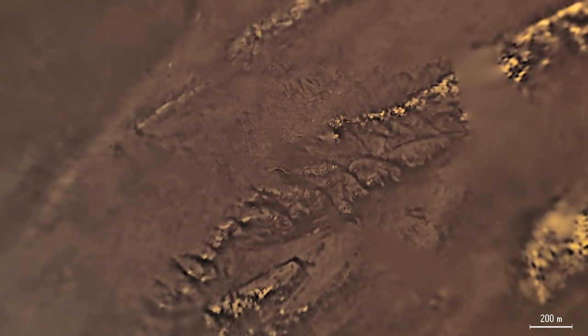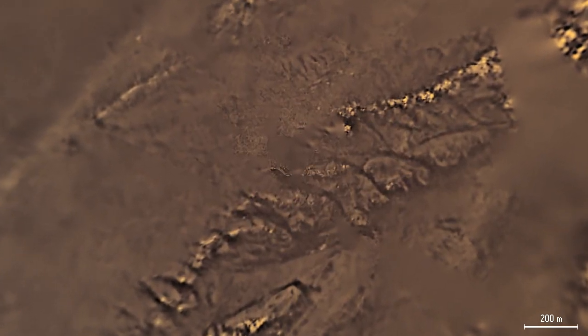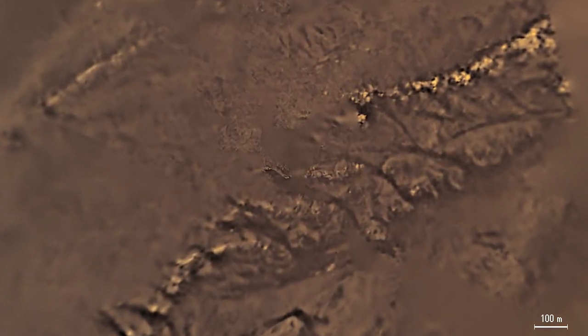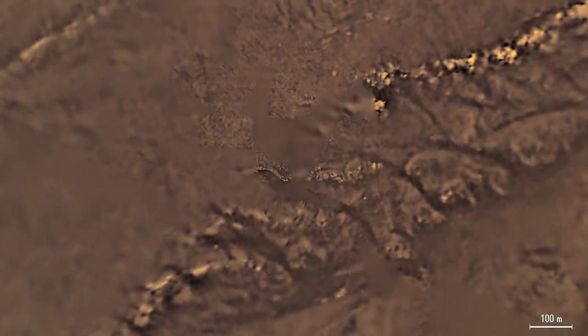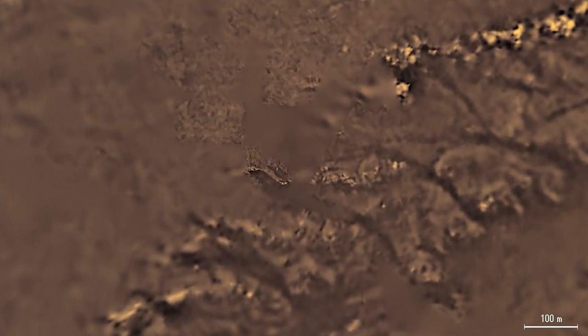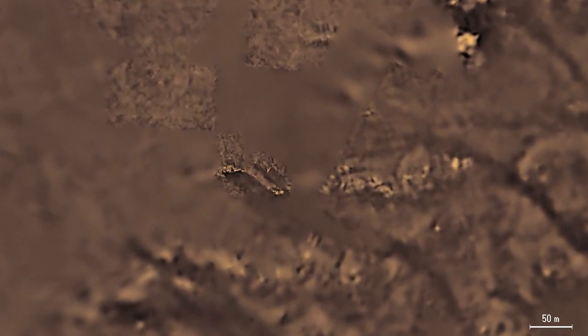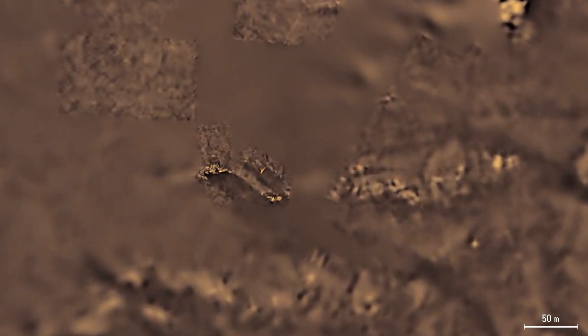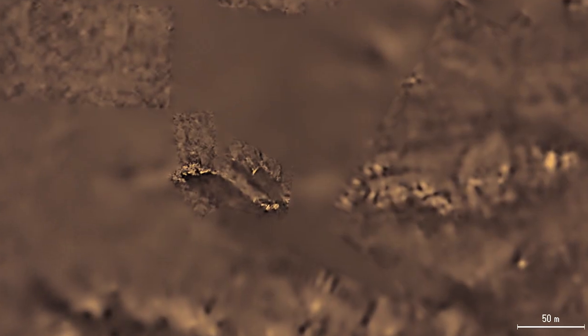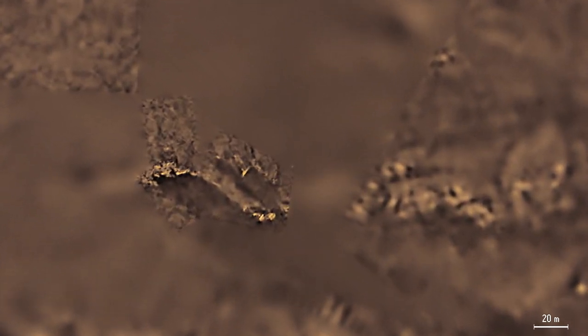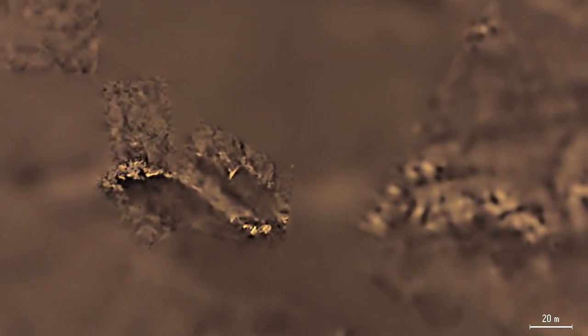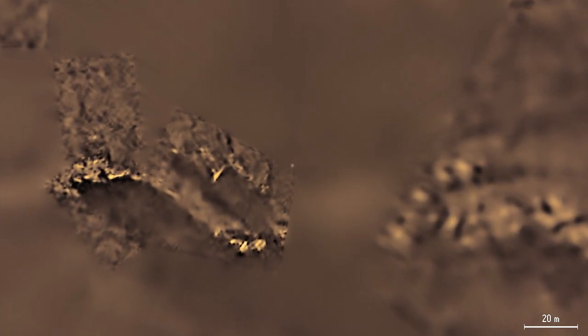Some regions were imaged with high resolution just before Huygens landed on Titan, especially the area to the west of the landing site. Most of Titan's surface is covered by dark organics that are produced in the atmosphere and slowly settle down. The bright spots may be exposed patches of water ice. The white dot in the center of the image is the landed Huygens probe.